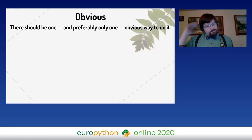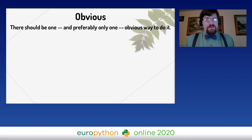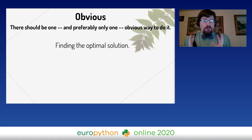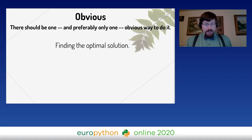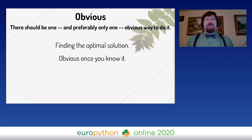Later in the Zen, Tim says there should be one and preferably only one obvious way to do it. This is one of the most quoted parts. But what is obvious? Obvious is about finding the optimal solution to a specific problem — the best possible way to solve this specific thing. The trouble is, it's not obvious looking into it; it's only obvious looking back retrospectively. When you read the code, you go, 'oh yeah, that makes sense — why did I think of doing it any other way?' That's what obvious means in Python.